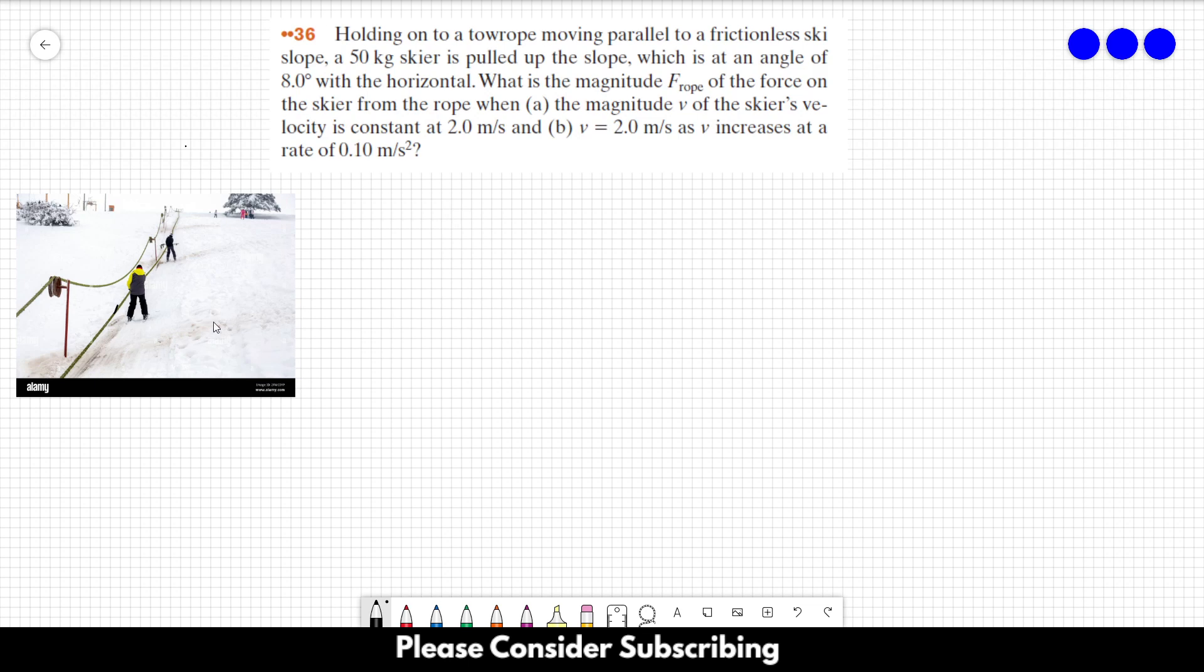We just have to draw a ramp because this situation is equivalent to this one. Let me make a draw. This is our slope. Let's say this is the skier, and then we have a rope pulling it up. This is f rope.